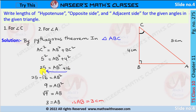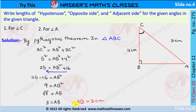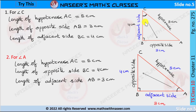5 squared is 25 and 4 squared is 16, so 25 is equal to AB squared plus 16. Transposing 16 from RHS to LHS: 25 minus 16 is equal to AB squared, which gives 9 equals AB squared. Therefore AB equals root 9, which is root of 3 squared, so AB is equal to 3 centimeters.